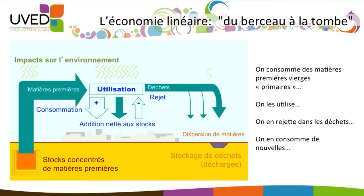Raw materials are extracted, processed, and used to build buildings, cars, furniture, telephones, and cans. All of this constitutes the stock of material being used, symbolized by the city on the graph. When we consume new raw materials — the blue arrow — they add to the stock, represented by the white arrow with a plus that goes to the city.